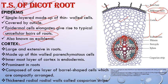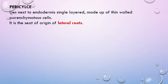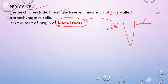Next is the cortex — it is large and extensive, a broad band-like structure made of parenchymatous living cells. The innermost layer is the endodermis, which is very prominent in roots, made of barrel-shaped cells in a single layer, compactly arranged. The radial walls of endodermis cells have thickenings called Casparian strips, whose main function is to prevent water leakage and form a watertight channel. Next is the pericycle — a single layer of thin-walled parenchymatous cells next to the endodermis. It is the seat of origin of lateral roots — lateral roots arise from the pericycle. This is a very important point.